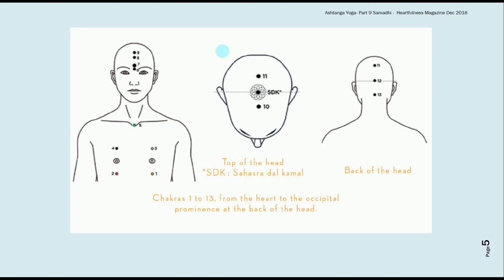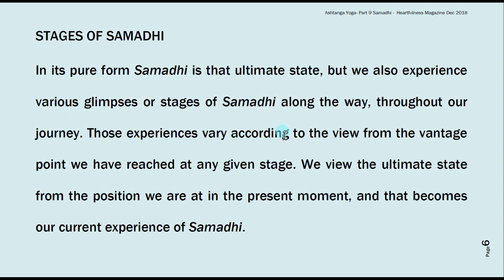These are the various points in the system. On the heart there are five points — the first, second, third, fourth, and fifth. Then the sixth, seventh, eighth, and ninth on the forehead. Then on top of the head, point 10. Then behind, Sahasra Dalakamal, point 11. And at the back of the head, points 12 and 13. We will talk about this in the further description.